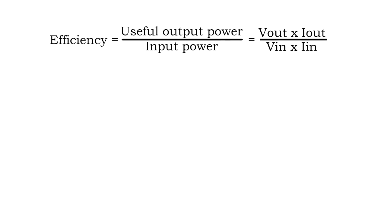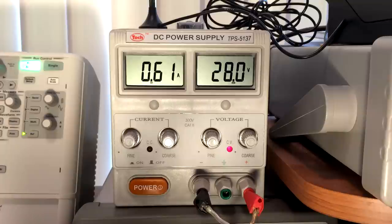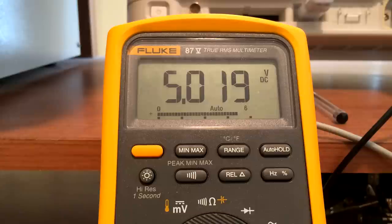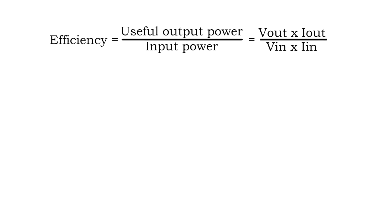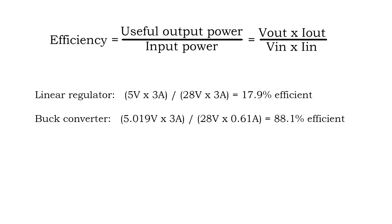Now let's measure the efficiency of our supply and compare it to a linear voltage regulator. From a 28 volt input my bench power supply is supplying 0.61 amps to our DC to DC converter. My multimeter says the output of the converter is 5.019 volts and I have the load set to exactly 3 amps. If you are doing this at home with resistors as a load, make sure you use your multimeter to accurately measure the output current. Here is the equation for power supply efficiency. Plugging in the values we measured earlier, we find that our power supply is around 88% efficient which is pretty good. This is why people usually use switch mode power supplies for currents higher than 1 amp.